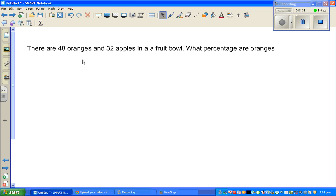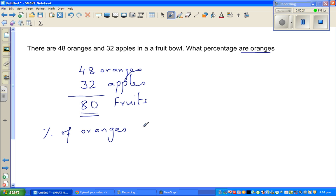There are 48 oranges and 32 apples in a fruit bowl. What percentage are oranges? So you've got 48 oranges and you've got 32 apples. So let me first find the total number of fruits. So the fruits is, this is 48 plus 2 is 50 plus 30 is 80. So you've got 80 fruit. So the question is, what percentage are oranges? Percentage is always out of 100. So in this situation you have 48 out of 80 oranges is the information that you have. And this I want to write out of 100.